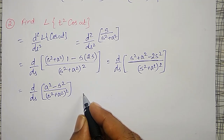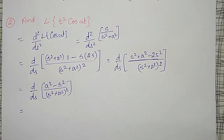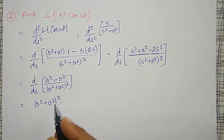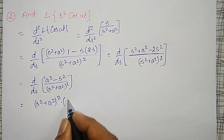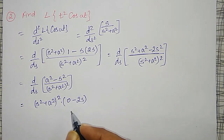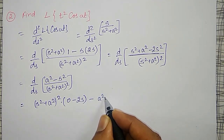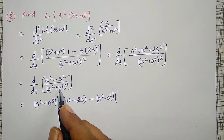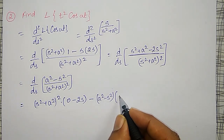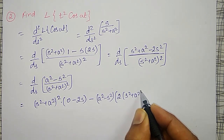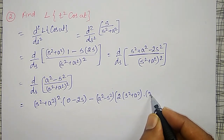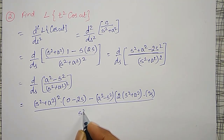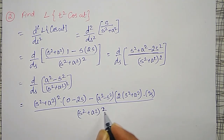Applying the u by v rule again: s squared plus a squared squared times differentiation of a squared minus s squared giving 0 minus 2s, minus a squared minus s squared times differentiation of the denominator by chain rule — that is 2 times s squared plus a squared times 2s — whole divided by s squared plus a squared to the power 4.